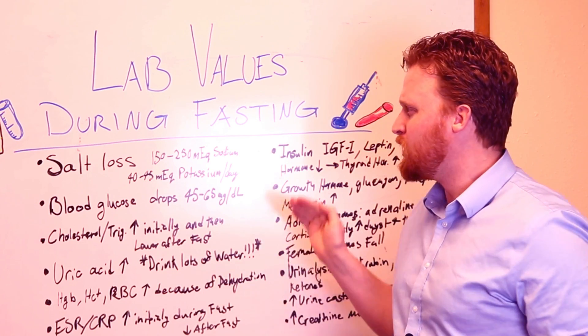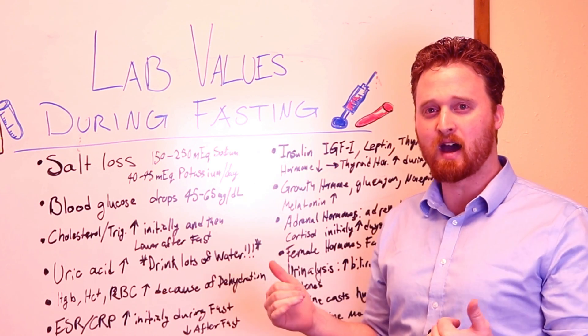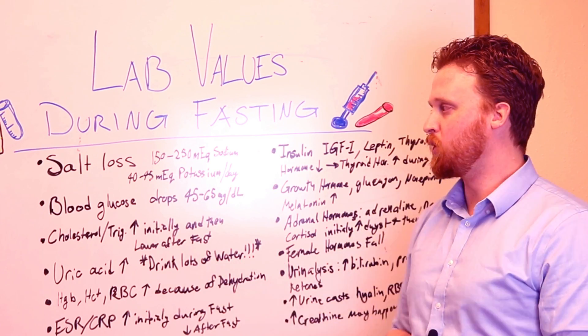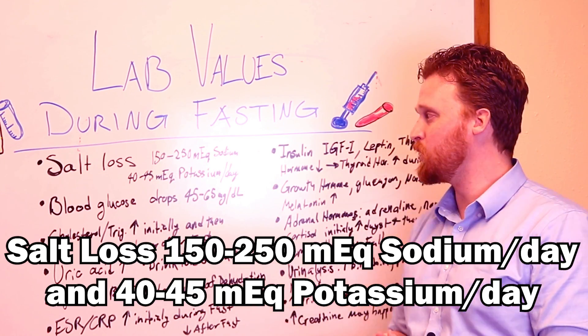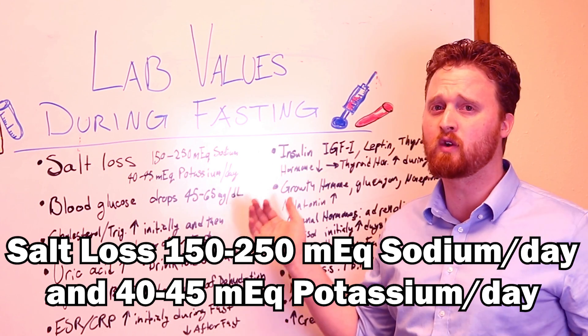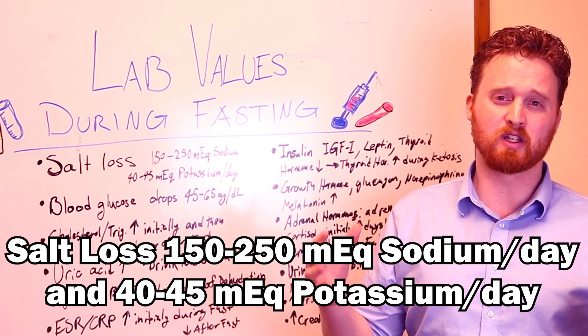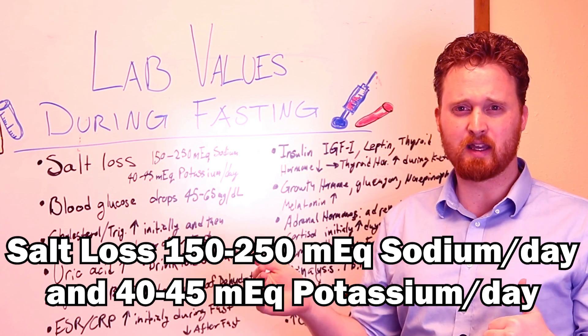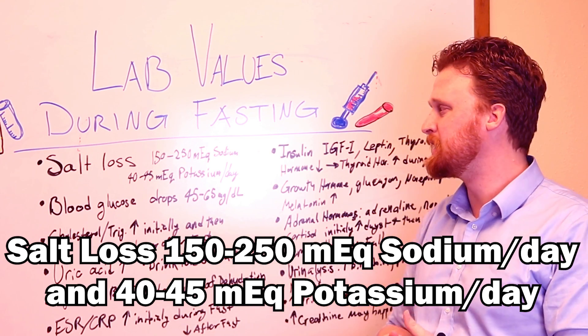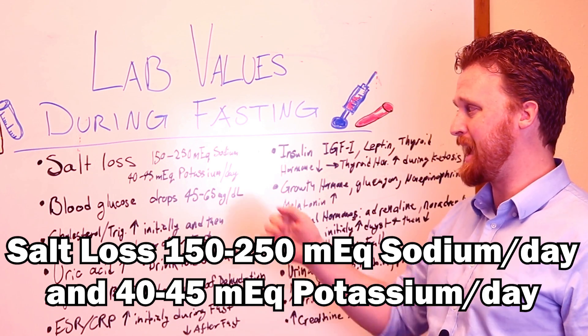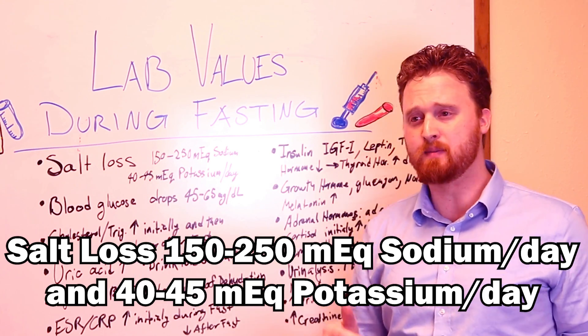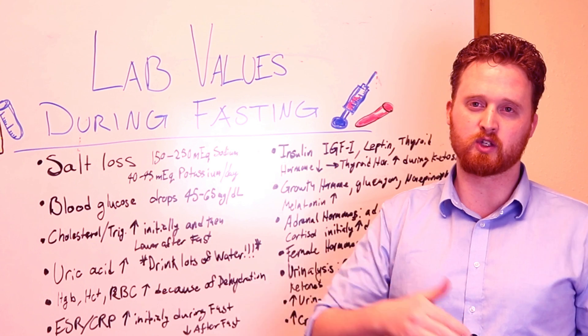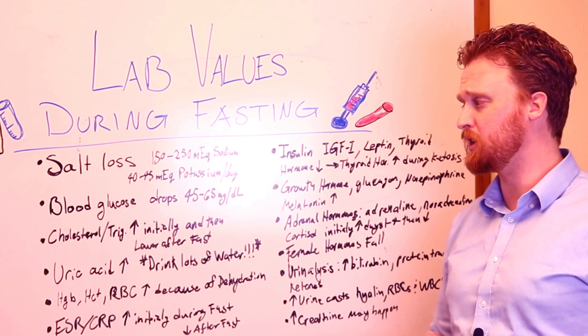The first one is that when you're doing a fast, the very most common one is that you're going to lose some salt in your system or electrolytes. With sodium, initially you're going to see about 150 to 250 milliequivalents per liter of loss initially. Then when you get further into it, you're losing only about 1 to 15 milliequivalents. You can lose about 40 to 45 milliequivalents of potassium per day, and that does go down when you're getting further to a more prolonged fast.